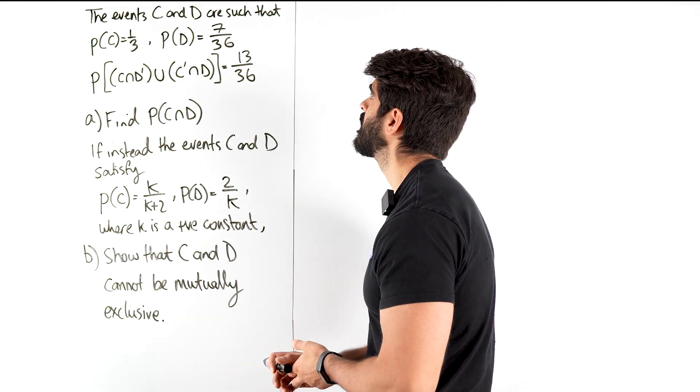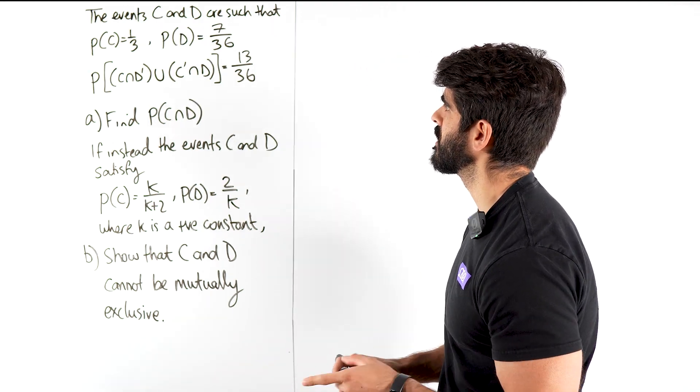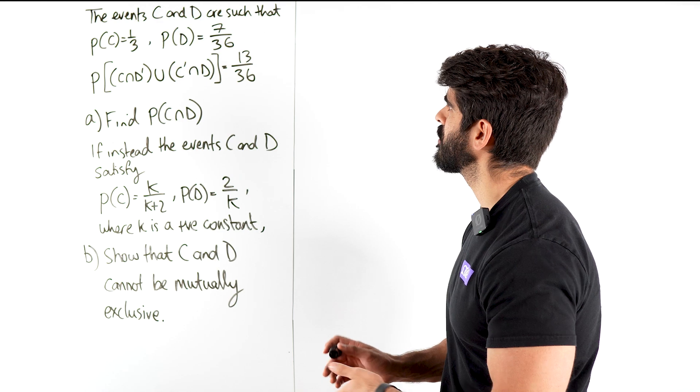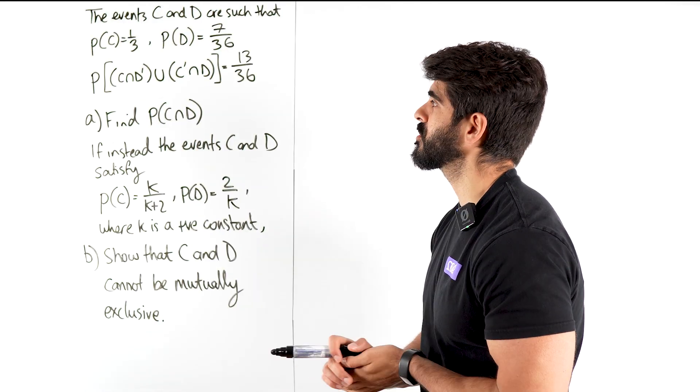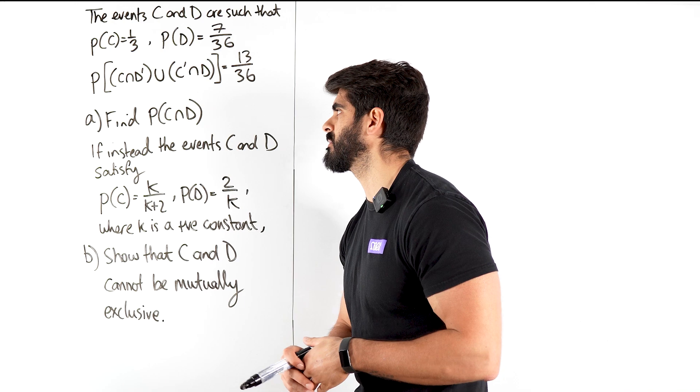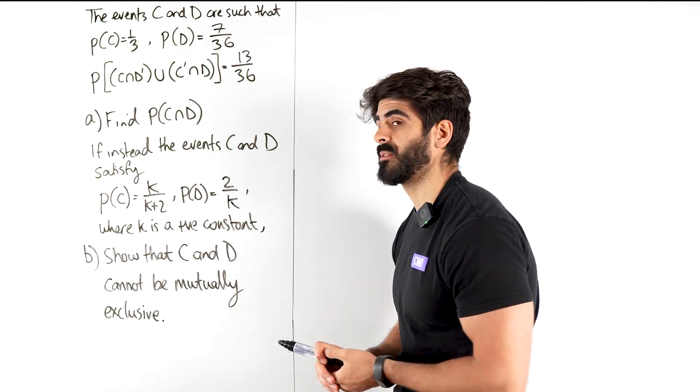It says the events C and D are such that the probability of C is a third, probability of D is 7 over 36, and the probability that C and not D or not C and D is 13 over 36. Find the probability of C and D, find the probability of that intersection.